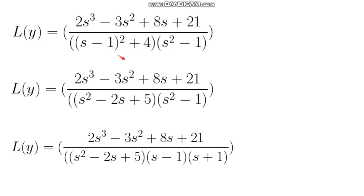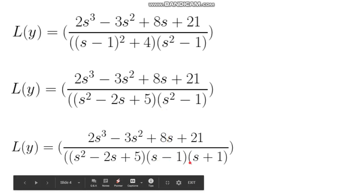Here I just multiplied everything back out, undid the square, basically the perfect square. And I expanded this into s minus 1 and then s plus 1.